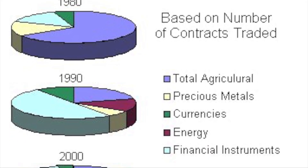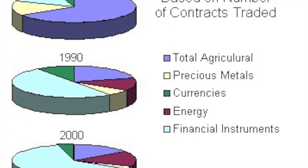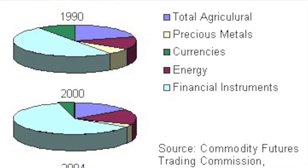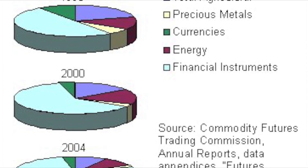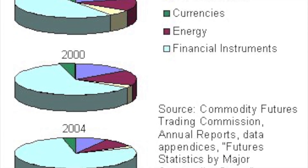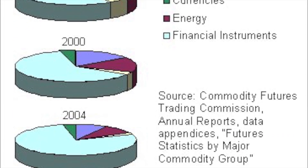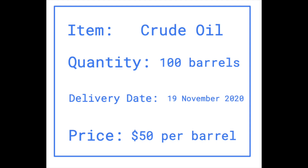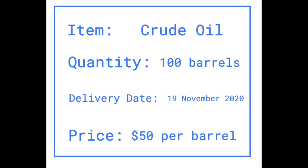A futures contract allows a trader to speculate on the direction of movement of the price of a commodity. If a trader bought a futures contract and the price of a commodity was higher at the end of the contract, the trader would have made a profit. On the other hand, if the price falls, the trader would make a loss. Speculators are also able to go short if they believe the price of an underlying asset will fall, with the net difference settled at expiration.